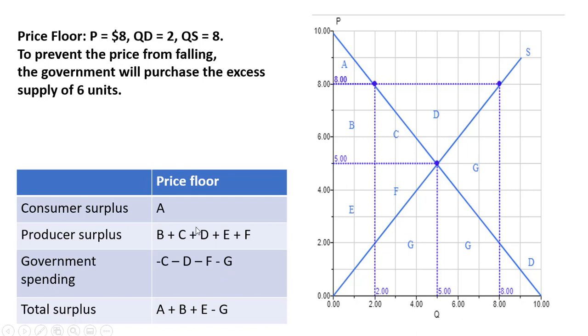So total surplus, adding up these three values here. Some of these cancel. The minus C and plus C cancel. The minus D and plus D cancel. The minus F and the plus F cancel. So you have A, B, and E here. And then you have this minus G hanging around as well.